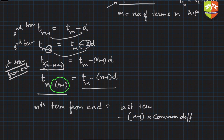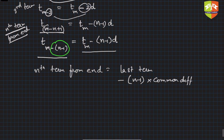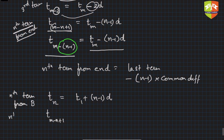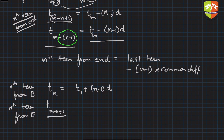To summarize: t_n from beginning is t1 + (n-1)d. The nth term from the end is t_(m-n+1) — meaning it is the (m minus n plus 1)th term from the beginning. This can also be written as t1 + (m-n)d.